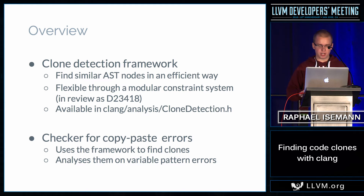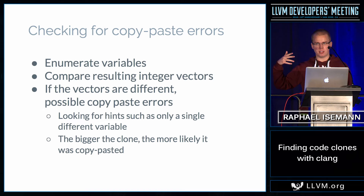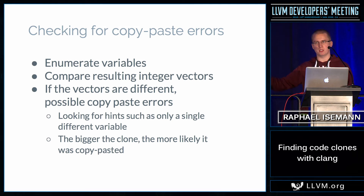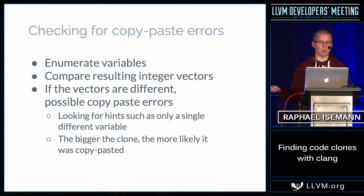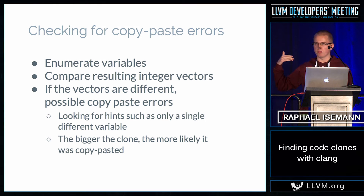What the checker does is it finds the similar nodes and then enumerates the variables. The first variable it encounters gets index zero, the next new variable gets index one, and if a variable was already seen, it gets the existing index. This gives us a feature vector for each clone, and we can compare these vectors to find if such a situation — a variable mismatch — has happened.